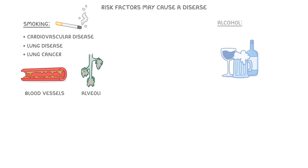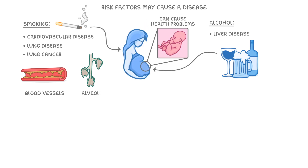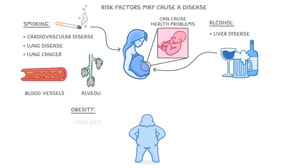Meanwhile, drinking too much alcohol can cause liver disease. And either smoking or drinking while pregnant can cause a whole range of health problems for the unborn baby. Other direct links include obesity, which itself can be caused by poor diet and lack of exercise, and can go on to cause type 2 diabetes.